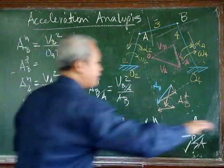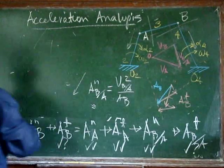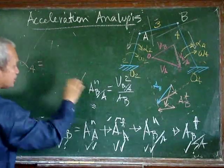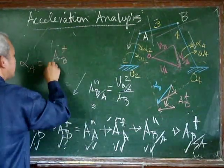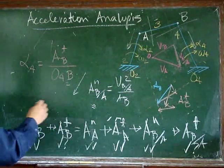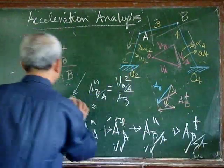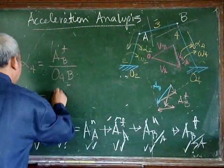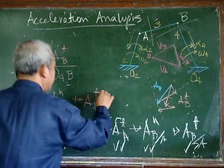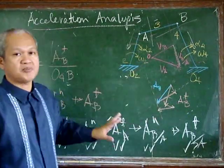With this, we can easily find the angular acceleration of body 4. The angular acceleration of body 4 equals the tangential acceleration of B divided by the distance O to B. The total acceleration of B is the vector sum of its normal and tangential components, as defined by our acceleration polygon.